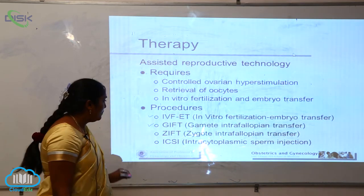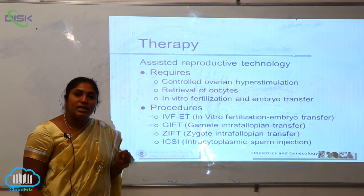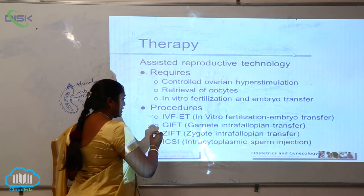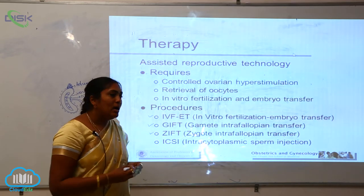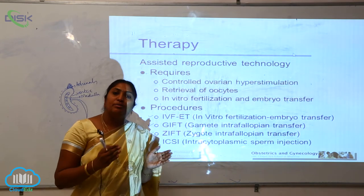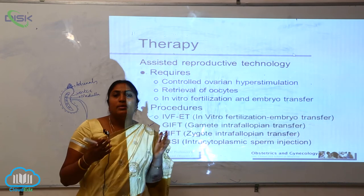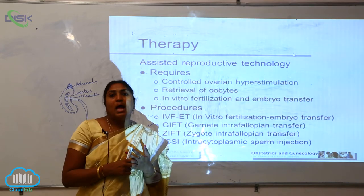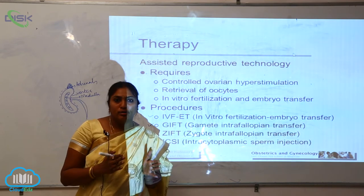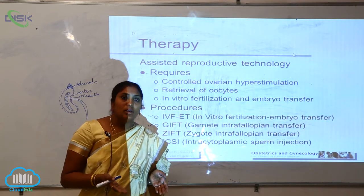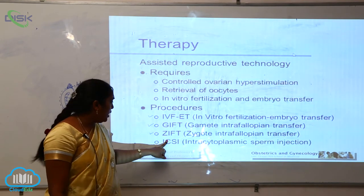The third procedure is ZIFT — Zygote Intra Fallopian Transfer. Here, fertilization is done outside the body, and the resulting zygote, which is the product of fertilization, is then placed inside the mother's fallopian tube.